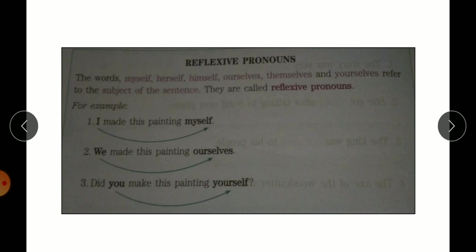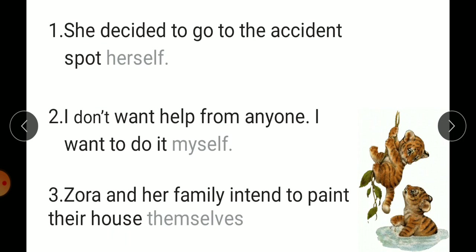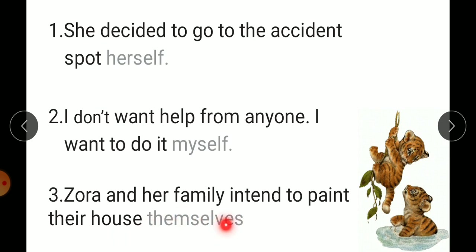Now the exercise: complete the following sentences using the correct reflexive pronoun. 'She decided to go to the accident spot' — the subject is 'she', so we use 'herself'. 'I don't want help from anyone, I want to do it' — for 'I' we use 'myself'. 'Zora and her family intend to paint their house' — it's plural, so we use 'themselves', referring back to Zora and her family.